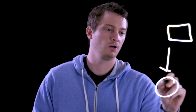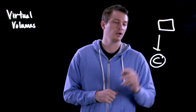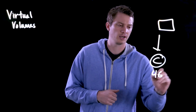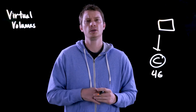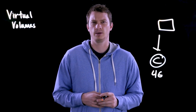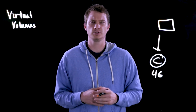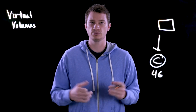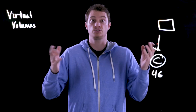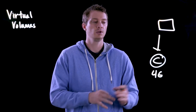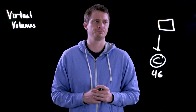Every VM has what they call a config vVol. A config vVol is usually four gigs in size and it holds the configuration information of that VM — like virtual hardware descriptions, some pointer files, some logs. Like how many NICs do you have? What network are they connected to? That's all stored in this config vVol.